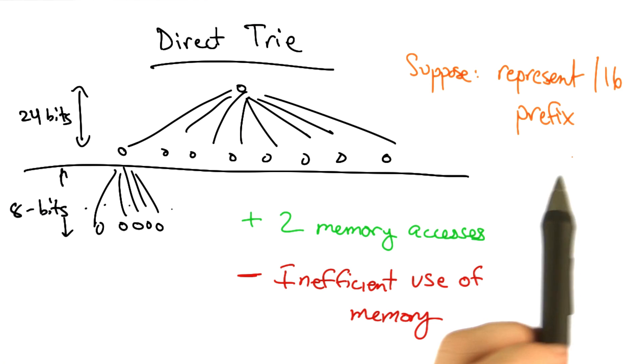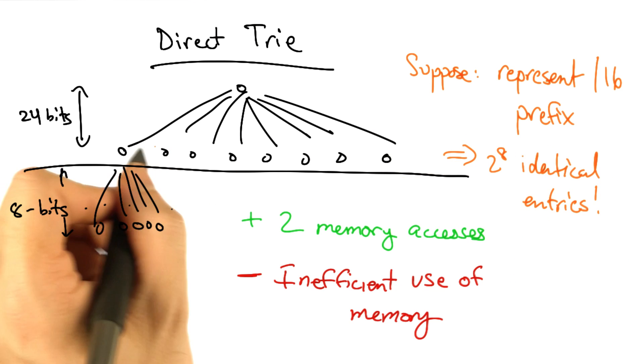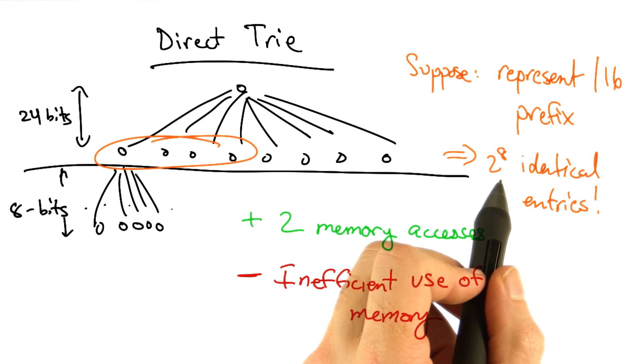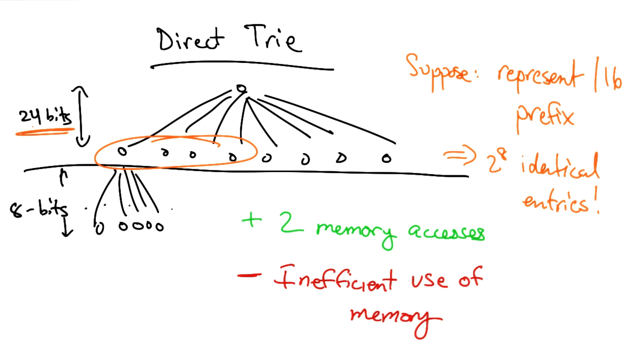We have to rather encode 2 to the 8th identical entries corresponding to the 2 to the 8th slash 24 prefixes that are contained in that slash 16. So this is an extremely inefficient use of memory.